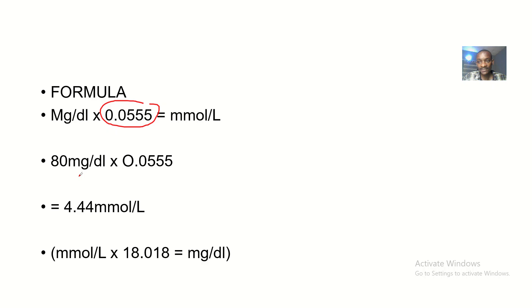So 80 milligrams per deciliter, you multiply by 0.0555. It will give you 4.4 millimoles per liter.